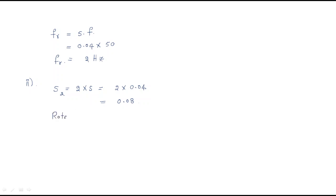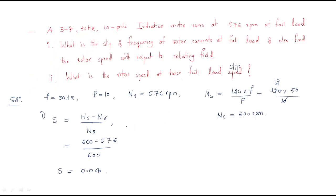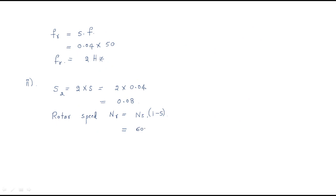To find the rotor speed, the formula is nr = ns × (1 - s). The synchronous speed is 600 rpm, so nr = 600 × (1 - 0.08) = 600 × 0.92 = 552 rpm. So the new rotor speed is 552 rpm.